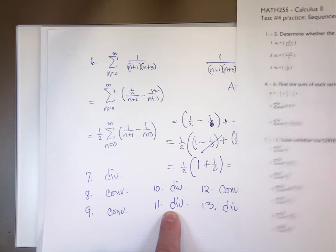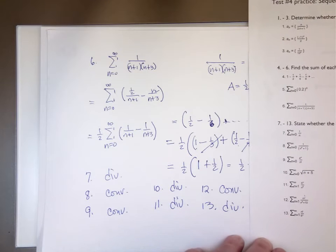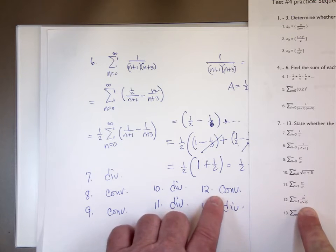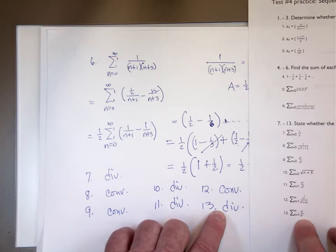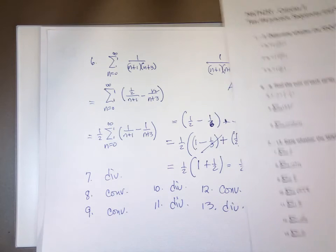Number 12: we have n to the 3-halves over n cubed plus 10. The difference in degrees is 3-halves, good enough to cause the series to converge — as long as the difference in degrees is greater than 1. Number 13: we have factorials over exponential forms. Factorials increase faster than exponential forms. Therefore, the terms are not going to go to 0, and that series will diverge.